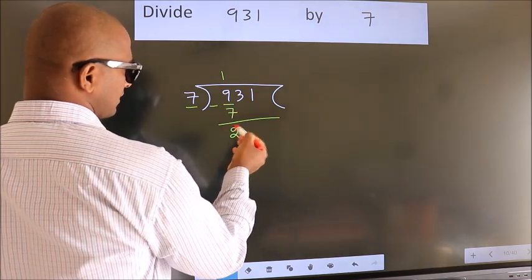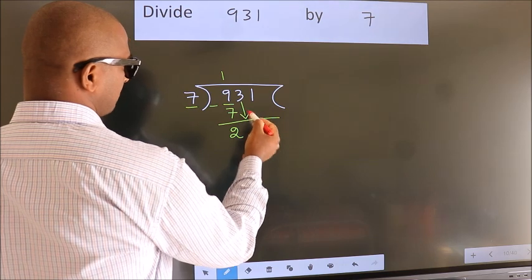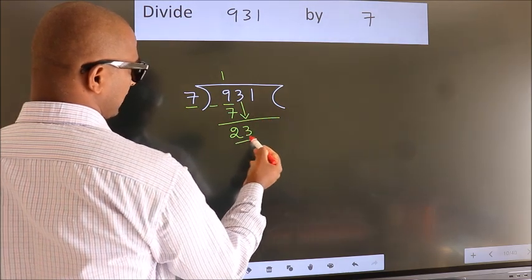After this, bring down the beside number. So, 3 down. So, 23.